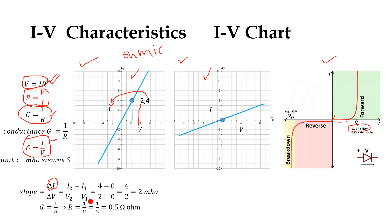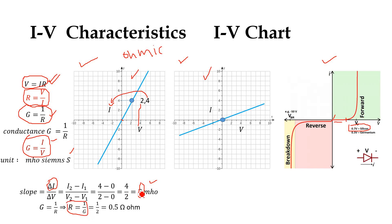The slope of this chart will be delta I divided by delta V, which is (I2 minus I1) divided by (V2 minus V1). Considering the initial and final points, the slope equals 2, and this is the value of conductance. Conductance is represented in mho, also known as Siemens, denoted by S. So the conductance here is 2 S. We can calculate resistance from conductance: R equals 1 divided by G. Since G equals 2, R equals 1 divided by 2, which gives 0.5 ohms.